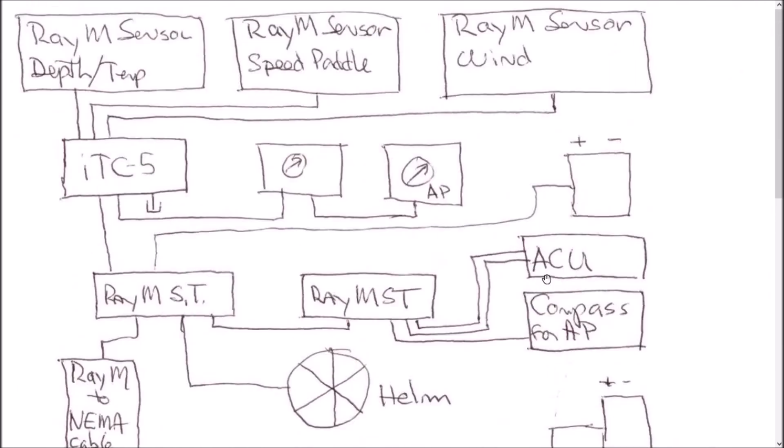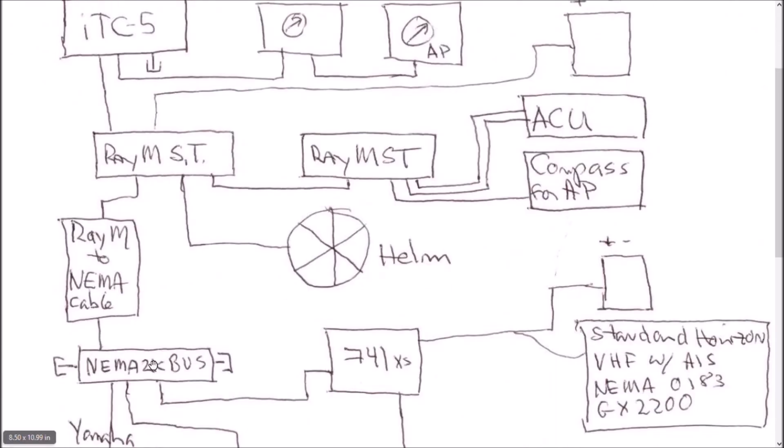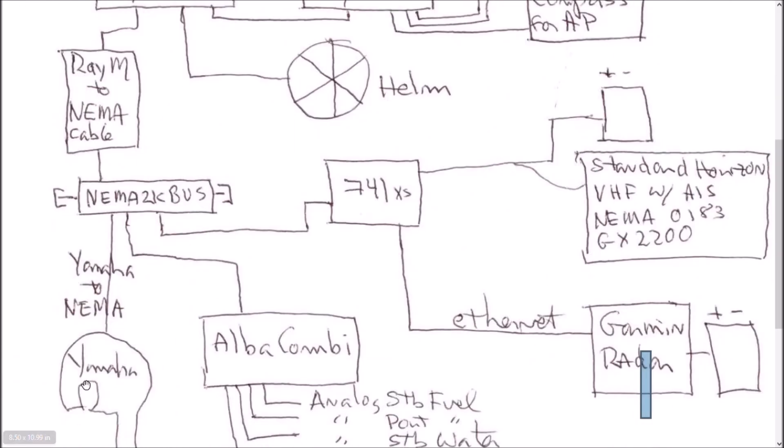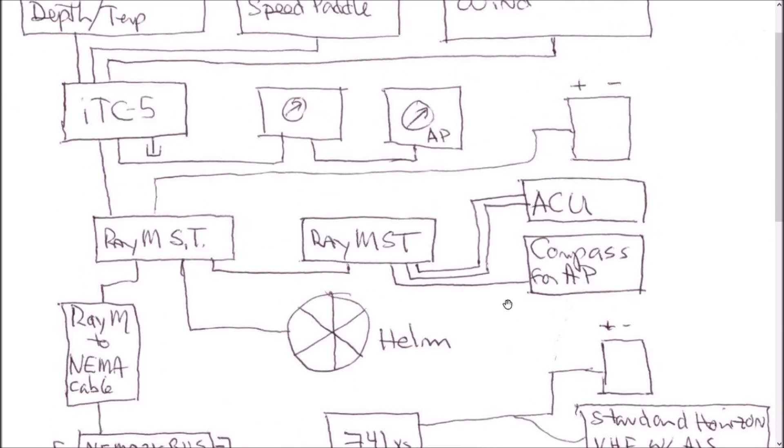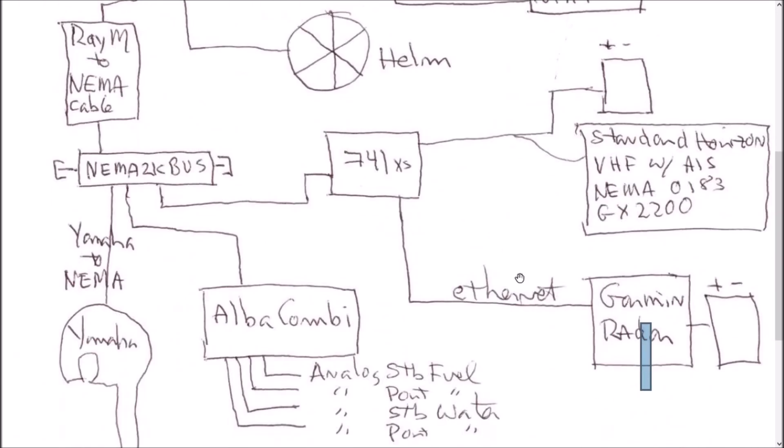So that's it. It looks pretty complicated, but when you break it down into the components, the Raymarine network translated into NEMA 2000, the Yamaha stuff that goes into NEMA 2000, the old analog stuff that goes into NEMA 2000, and everything fed over to the 741 that allows me to display all this. By the way, on these gauges up here, on the Raymarine gauges, I can actually show things like fuel, etc. So there's a lot that you can show on these gauges if you want to do that as well. I hope this is useful to you. Thank you so much.